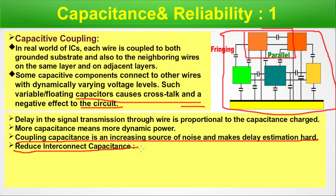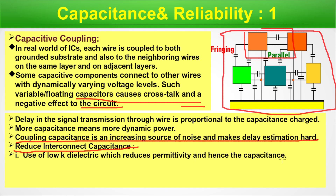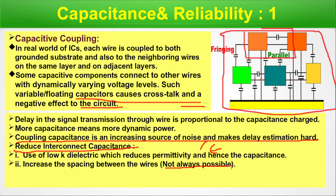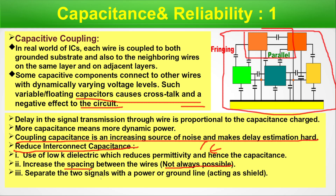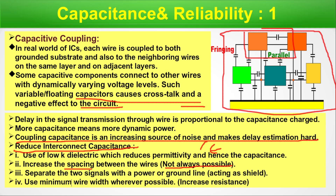Steps to reduce interconnect capacitance include: use of low-K dielectric, which reduces permittivity and hence capacitance (low-K meaning lower dielectric constant than silicon dioxide); increase the spacing between wires (though this is not always possible when fitting more devices); separating two signals with a power or ground line acting as a shield; and using minimum wire width wherever possible. However, reducing wire width increases resistance (R = ρL/A), so this is a trade-off.